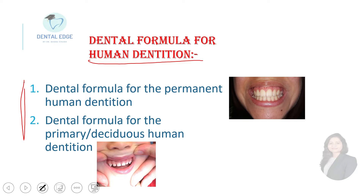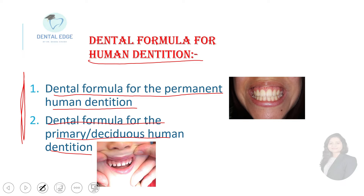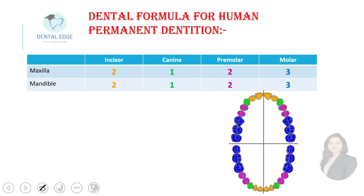We will read this under two headings: first, the dental formula for the permanent teeth — that is, the permanent human dentition — and second, the dental formula for the primary or deciduous human dentition. We know that there are two sets of teeth: the milk or deciduous teeth, and the permanent teeth.